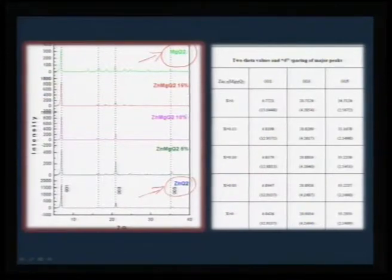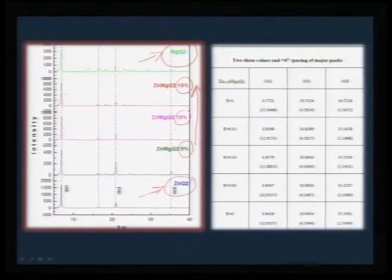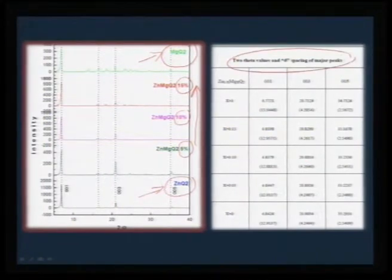The next three solid solutions are with varying percentages of magnesium from 5 to 15%. You can keep varying it, and all these precursors show low-angle reflections at around 7 degrees. Once you ensure that such a solid solution precursor is made, you can then look at the possibility of converting it into the corresponding oxide. The major peaks are all listed and are closely matching, so we can say that they resemble the same crystal symmetry.